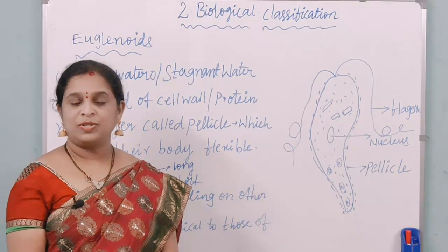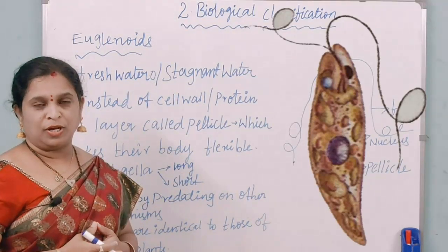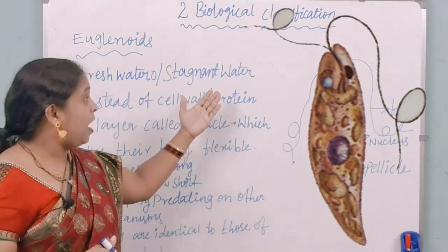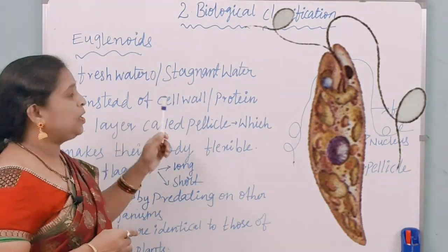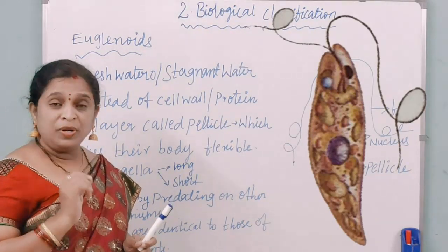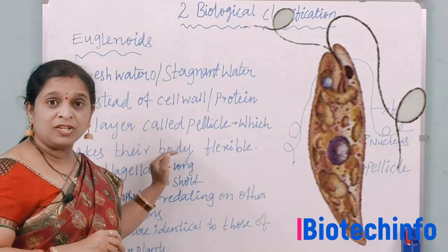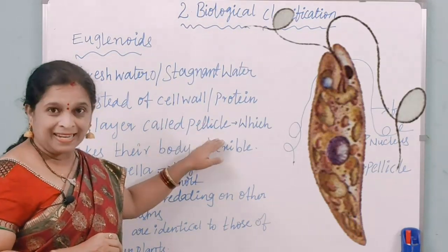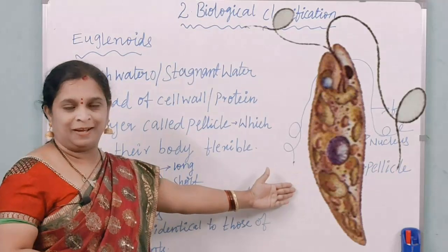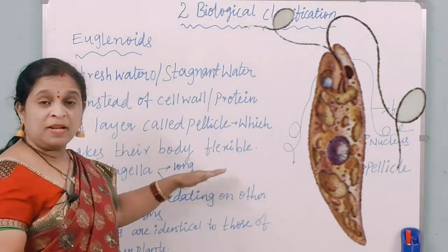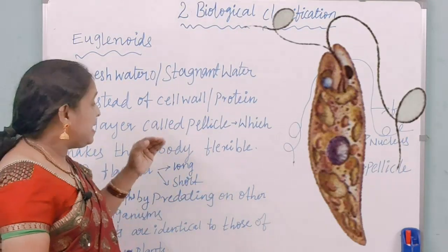Now coming to euglenoids. Mostly the members of euglenoids are freshwater organisms and they stay in stagnant water. Instead of a cell wall, euglenoids have a unique characteristic feature — a protein-rich layer called pellicle, which gives flexibility to the organism Euglena and makes the body flexible.